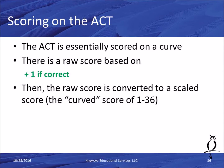Let's talk about scoring on the ACT. The ACT is essentially scored on a curve. There's a raw score based on plus 1 for each correct answer — so 38 correct gives you 38 raw points. That score is then converted to a scaled score, the 1 to 36 score that is your ACT score for that section or cumulatively.